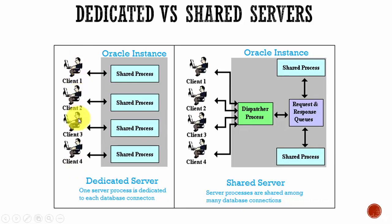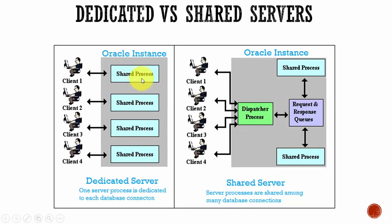If we have four users running, we have four processes running in the Oracle instance. That means for every user connection, there is a new process created within the Oracle instance. Once the process is created, the communication goes back between the user session and that process, so each user will be interacting with the corresponding process.